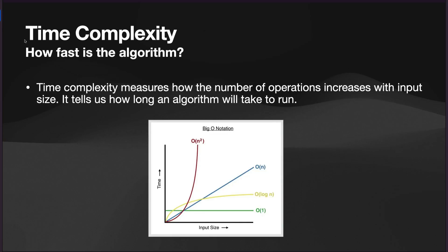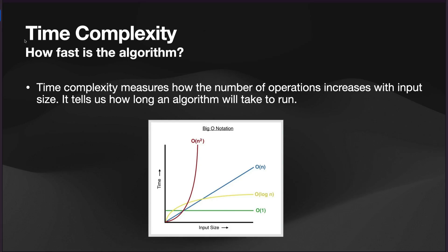And there are ultimately two key aspects to consider. The first is time complexity. So essentially, how fast is our algorithm? So this measures how the number of operations increases with input size. It tells us how long an algorithm will take to run. So you can imagine this is a very important concept when trying to make the algorithm as efficient as possible, right? Algorithms that are really slow are really bad. Algorithms that are really fast are really good.